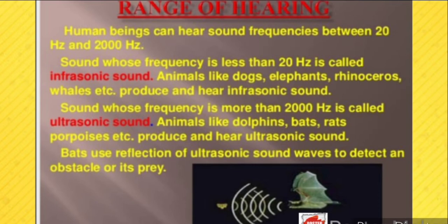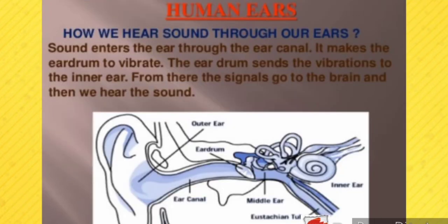Bats use the reflection of ultrasonic sound waves to detect obstacles or prey. The audible range for humans is 20 Hz to 20,000 Hz.